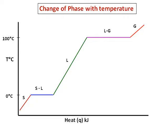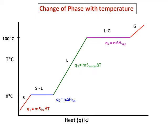We need to know the heat involved in each of these five transitions. For Q1, heating ice from below 0 to 0 degrees Celsius, we use Q = ms∆T, using the specific heat of ice. For Q2, the solid-to-liquid phase transition, we use delta H fusion multiplied by the number of moles — we are fusing it. For Q3, the liquid phase heating, it is again Q = ms∆T, where the specific heat of water is used.